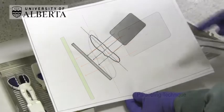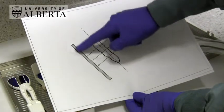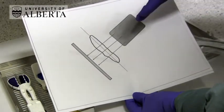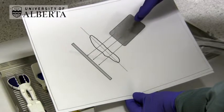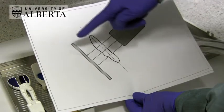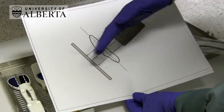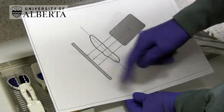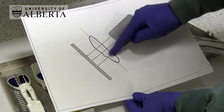In the paralleling technique, the receptor is positioned parallel to the long axis of the tooth, and the beam indicating device is then angled so that the central rays hit both the long axis of the tooth and the receptor at a right angle. In order for this technique to work, the image receptor is placed quite a distance from the actual tooth.